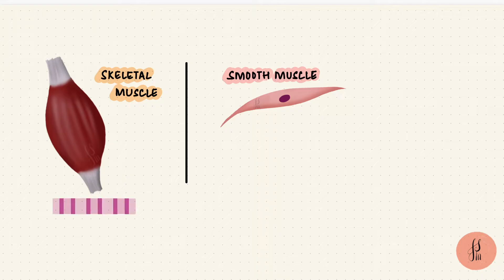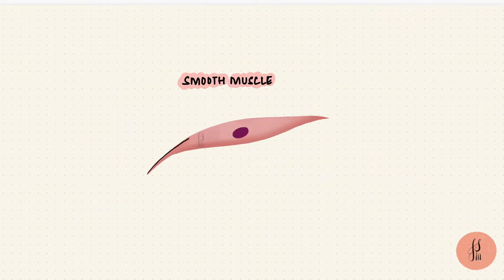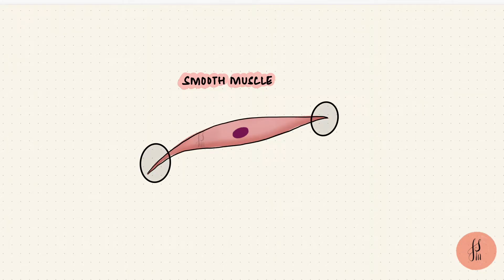Unlike skeletal muscle cells, smooth muscle cells are not striated. That's why they're called smooth muscle. They're also called plain muscles. Smooth muscle cells are spindle-shaped with tapering ends and they've got a central nucleus.